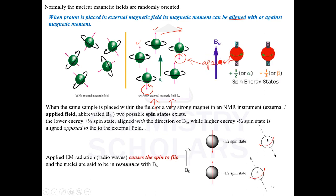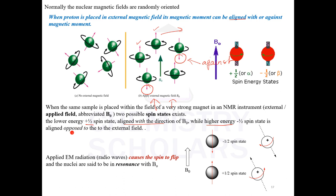Once you apply the magnetic field, there is splitting into two possible spin states. One is the plus 1/2 spin state, which has lower energy and is aligned in the direction of the magnetic field, and the second is the higher energy minus 1/2 spin state, which is aligned opposite to the external magnetic field.